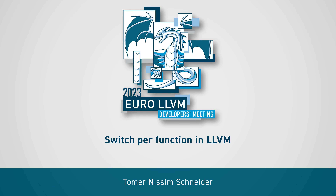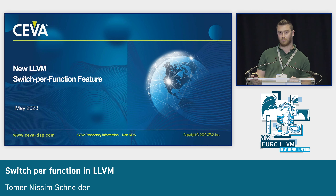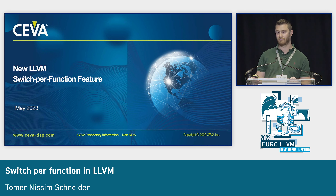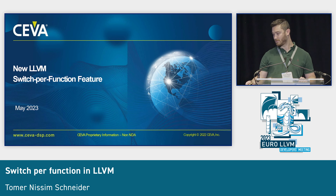Hi, I'm Thomas Schneider from SIVA and I'm going to talk about a new feature in LLVM called Switch Per Function. The idea is to control different code generation at the function level and not at the file level.